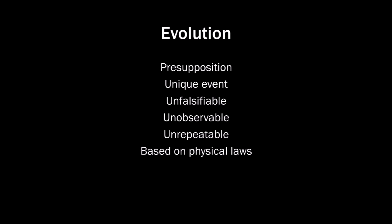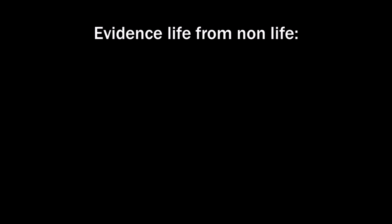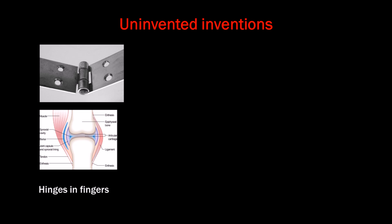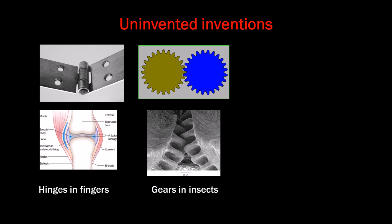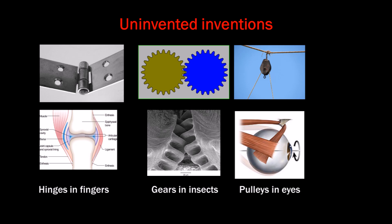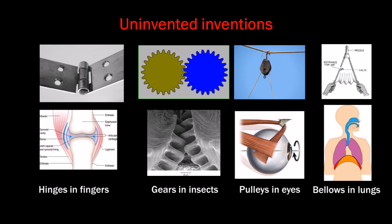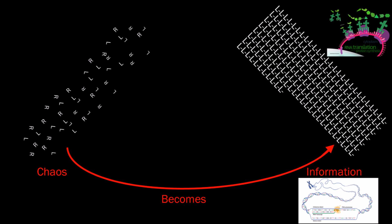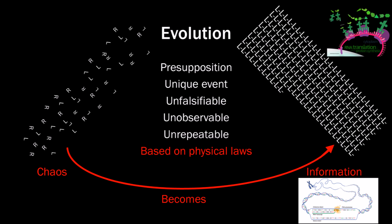Is evolutionary theory based on physical laws? There isn't the slightest piece of evidence that life can form from non-life. According to the theory, all inventions in biology evolved — they are uninvented, just happening to grow there because of natural selection. However, when multiple dependencies must be met before something works, natural selection cannot do it. We observe today that inventions can only come from intelligent design. Chaos cannot form information by chance, and our DNA consists of as much information as an encyclopedia. So actually, evolutionary theory violates quite a lot of physical laws.